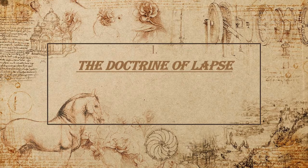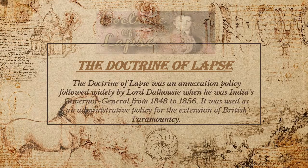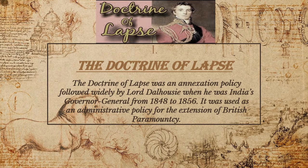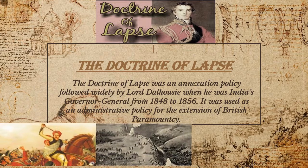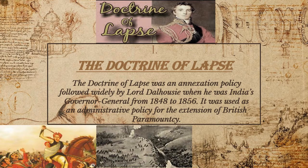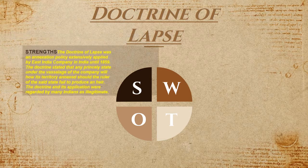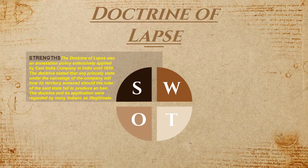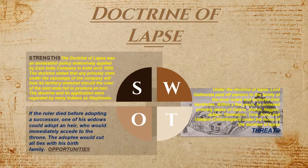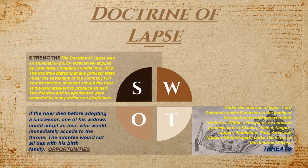The Doctrine of Lapse was formulated by Lord Dalhousie as a peaceful way of annexing subordinate Indian states and bringing them under the direct rule of the Company. According to this doctrine, all subordinate states — that is, subsidiary states and states created by the British — where the rulers died without a natural male heir would automatically lapse, or pass into the hands of the British. Rulers without heirs could not adopt a son, according to age-old Hindu and Islamic traditions, without the permission of the Company. Dalhousie applied the Doctrine of Lapse to Satara, Jhansi, and Nagpur.